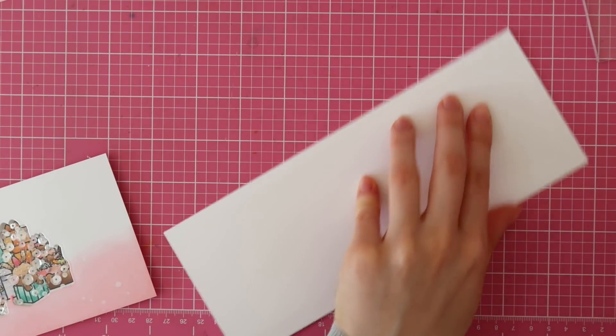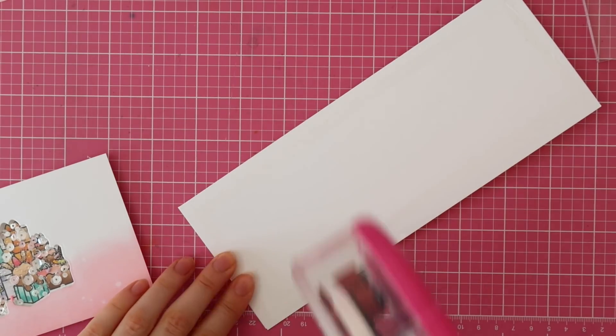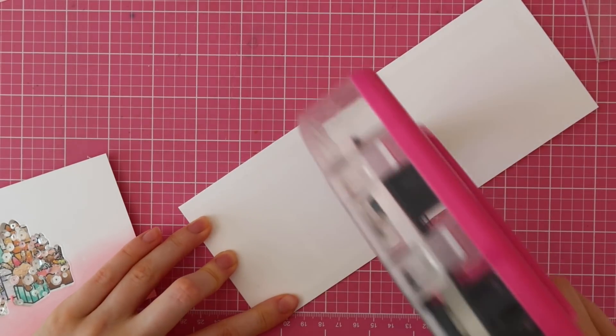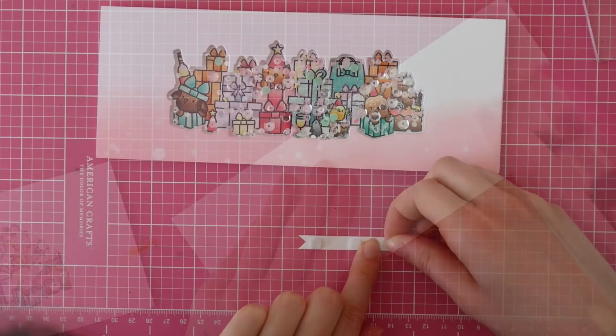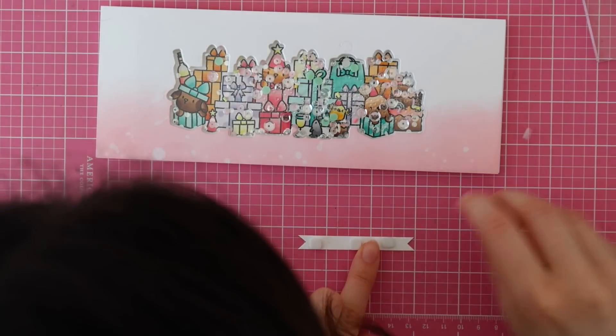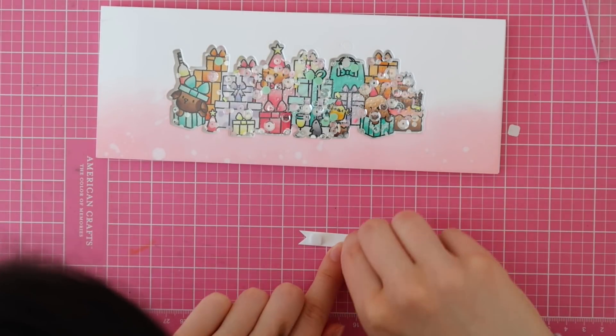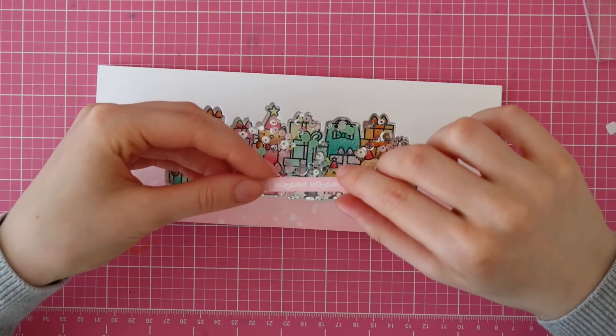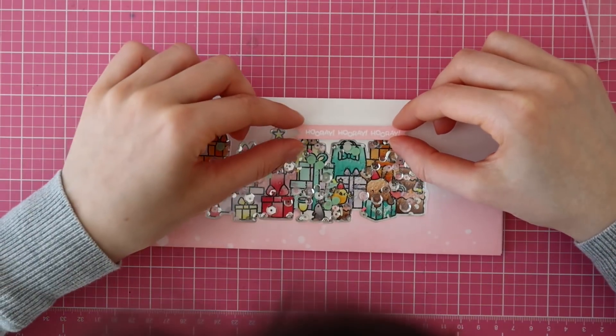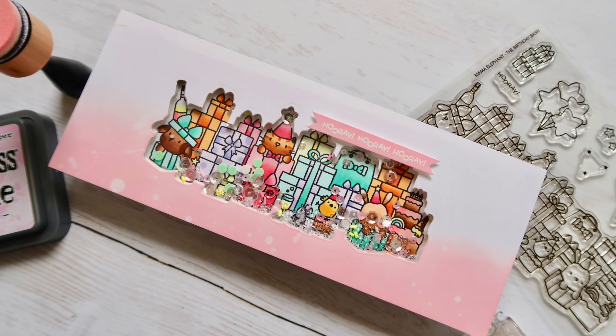After heat embossing that, I cut a v-shaped banner out of that strip of cardstock and I'm going to adhere my shaker piece on that tall card that I created earlier to finish it all off. And I'm also adhering my v-shaped banner on my shaker card using foam adhesive.